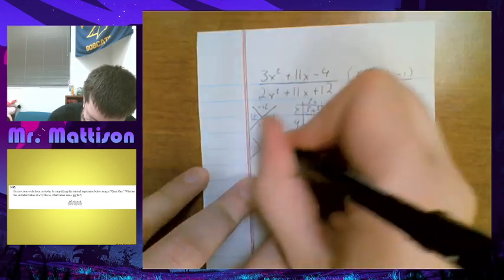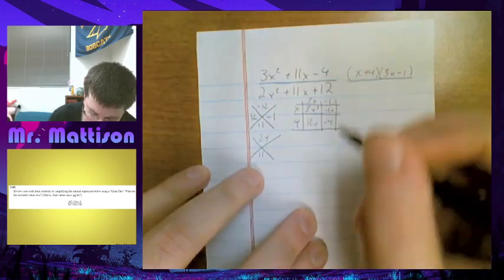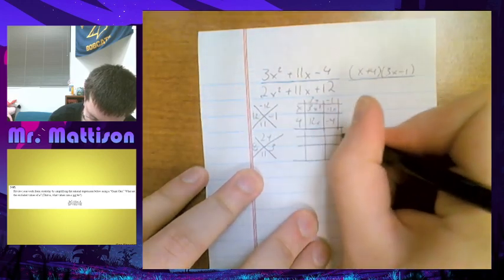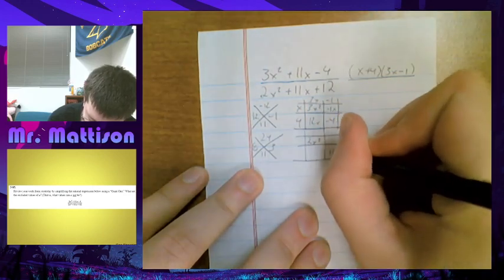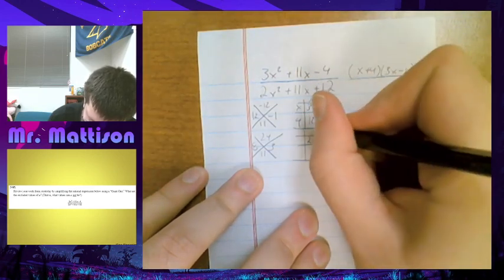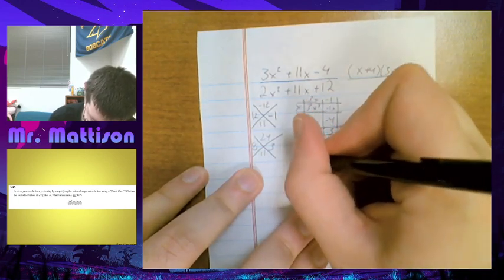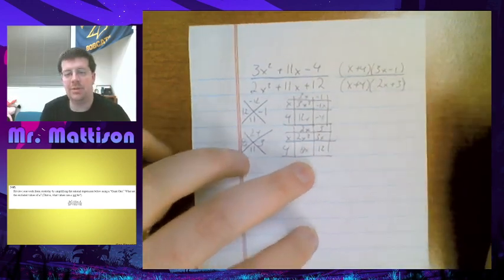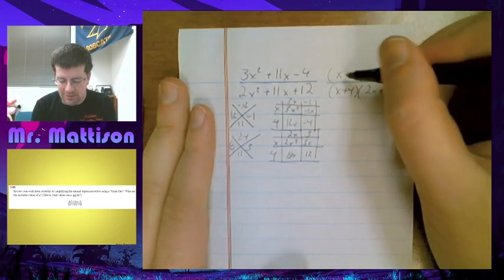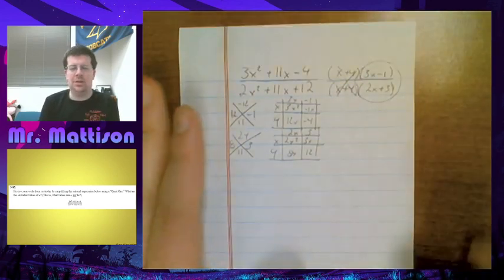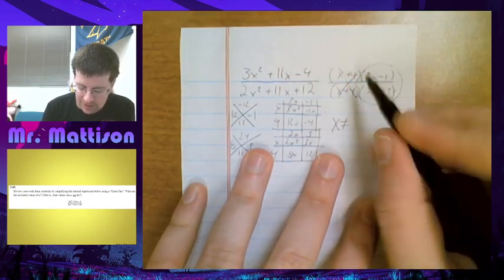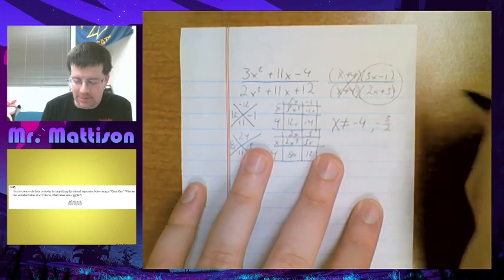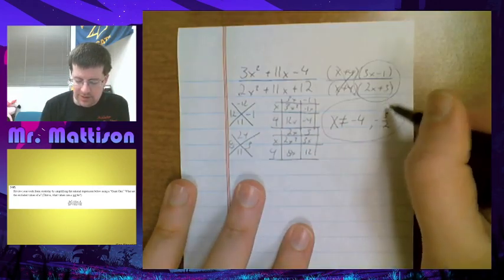The bottom is going to factor. 2 times 12 is 24 and 11, so what multiplies to be 24 adds to be 11 — that's 8 and 3. Drawing out my box: 2x squared, 12, 8x, 3x. I can pull out a 2x and a 3, and an x and a 4. So the bottom factors into x plus 4 times 2x plus 3. Once I'm there, I have x plus 4 on top and x plus 4 on bottom — that's going to cancel out. I need to add domain restrictions: x cannot be negative 4 from this value, and x cannot be negative 3 halves from that value.